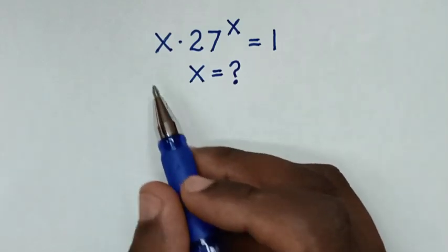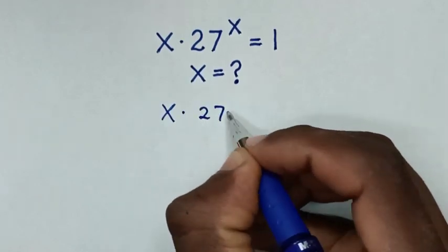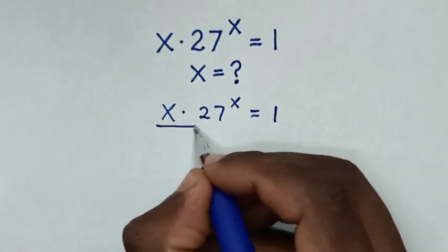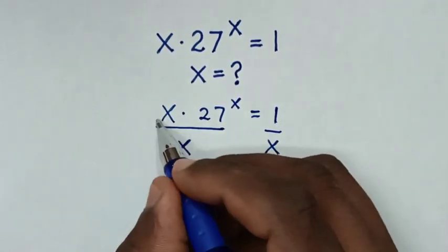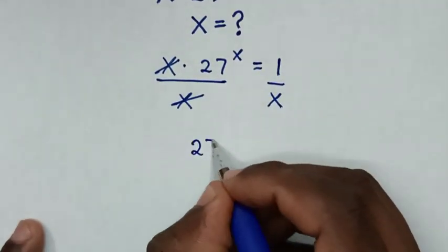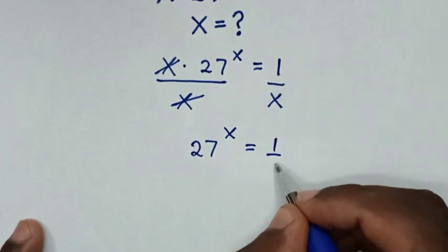First we will divide by x on both sides. So for the equation x times 27 to the power of x equals 1, we divide by x on both sides. Then this x will cancel with this x, so it becomes 27 to the power of x equals 1 over x.